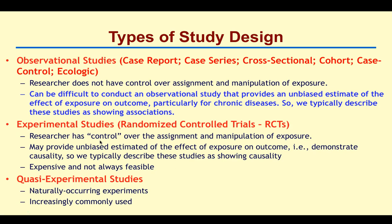But because the researcher has control of the assignment and manipulation of exposure more so than in observational studies, clinical trials are more likely to provide an unbiased estimate and to demonstrate cause and effect — causality. So we can typically describe experimental studies as showing causality more so than observational studies. However, these experimental studies are not always feasible or inexpensive. Also, you cannot assign people to a dangerous exposure — you can't assign one group to smoking if we know that exposure is dangerous. Sometimes the only study we can do is an observational study.